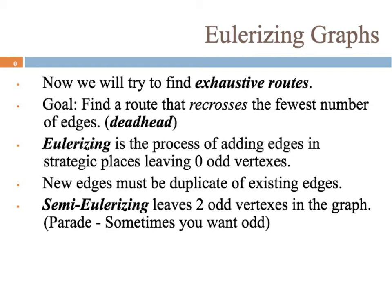Eulerizing is the process of adding edges in strategic places, leaving zero odd vertices. It's kind of like adding a fake edge on top of another edge so we can recross it. New edges must be duplicates of existing edges. Semi-eulerizing leaves two odd vertices in the graph — sometimes you want to start and end at opposite places, like a parade, for example. We'll talk about that towards the end.